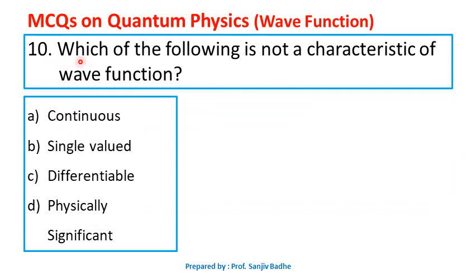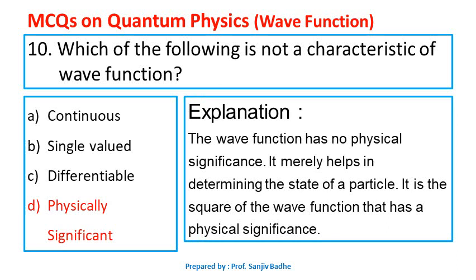Question number ten. Which of the following is not a characteristic of a wave function? Options are: continuous, single-valued, differentiable, or physically significant. We have seen that a wave function must be continuous, single-valued everywhere, and its derivatives must also be continuous and single-valued, so it must be differentiable. However, the wave function itself does not have any physical significance — it merely helps in determining the state of the particle. It is the square of the wave function that has physical significance, giving the probability of finding the particle at a given point and time. So, the answer is physically significant.